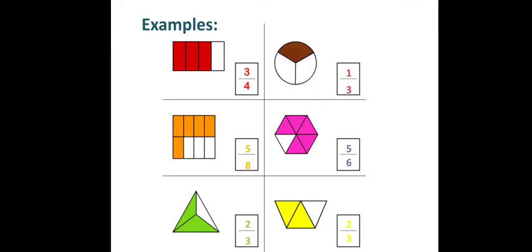Let's see some more examples. See the first picture. It is a picture of a rectangle. It is divided into 4 parts and 3 parts are colored. So we write it as 3 by 4. 3 is the numerator, that is the shaded part, and 4 is the total divided parts. So 3 is the numerator and 4 is the denominator.